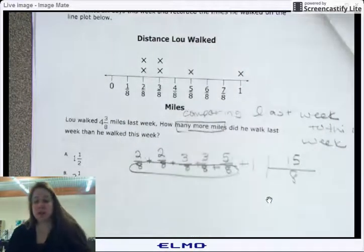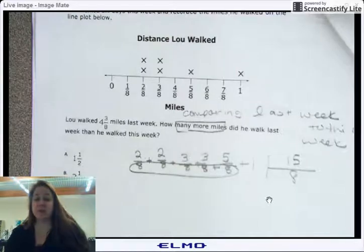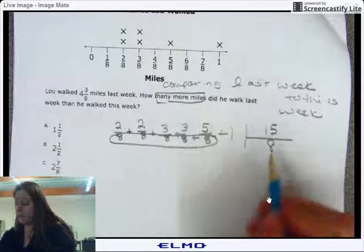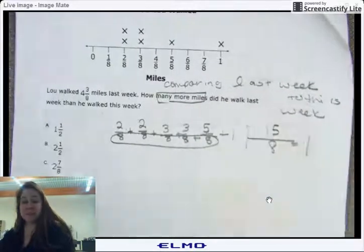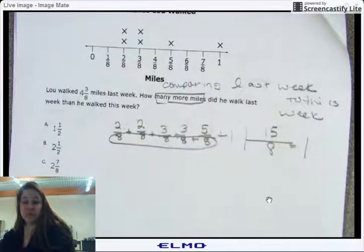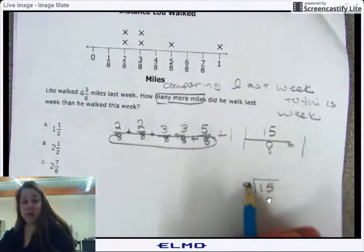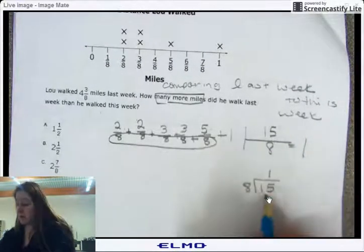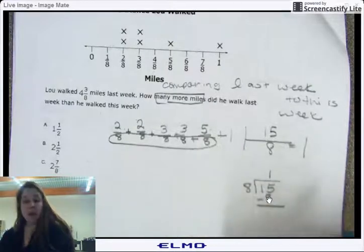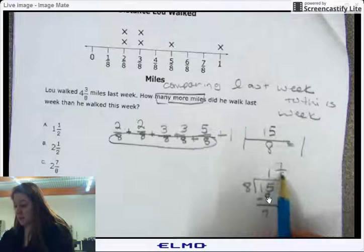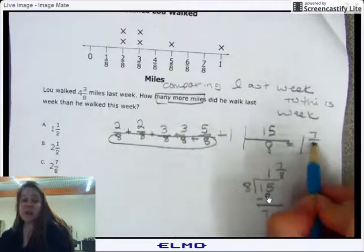Let's change that into the proper fraction before we can subtract. So how many times can eight go into fifteen? One time, right? Because if you didn't know, you would have taken 15 and divided it by eight. It would have gone in one time and when you subtract, you get seven eighths remainder.